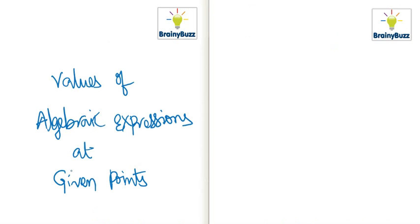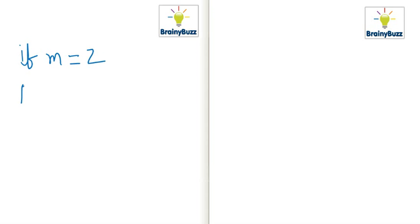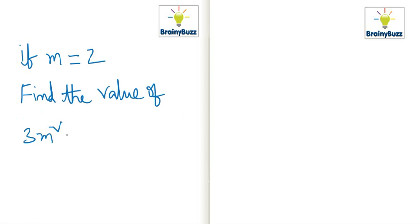Welcome everyone. In this session I would like to explain about values of algebraic expressions at given points. At a given point, certain values are obtained. For example, if m is equal to 2, find the value of 3m squared plus 5m plus 2. This is the expression.